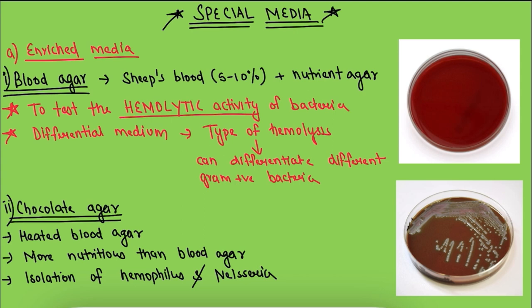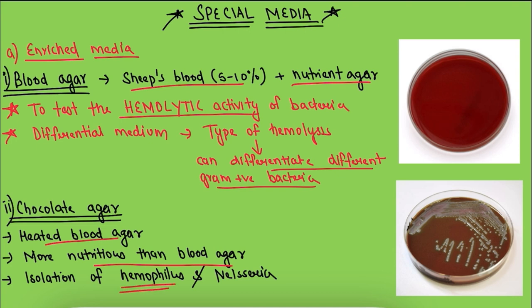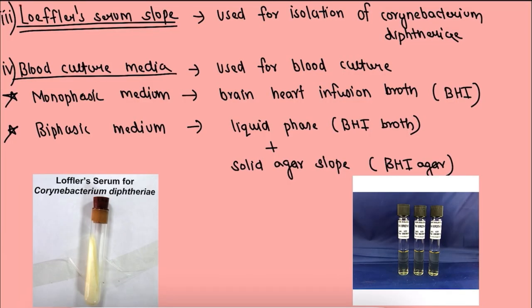Starting with enriched media, we have blood agar. Blood agar consists of sheep's blood 5–10% plus nutrient agar. It is used to test the hemolytic activity of bacteria and is also a differential medium, as the type of hemolysis can differentiate different gram-positive bacteria. The second one is chocolate agar, which is heated blood agar. It is more nutritious than blood agar and is used for isolation of Haemophilus and Neisseria.